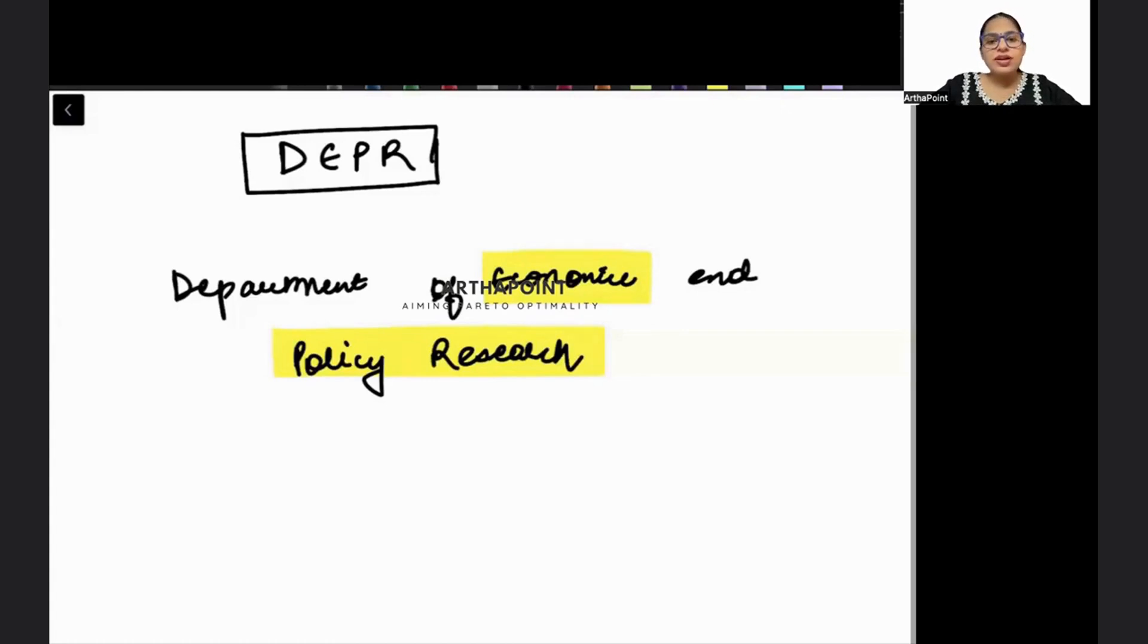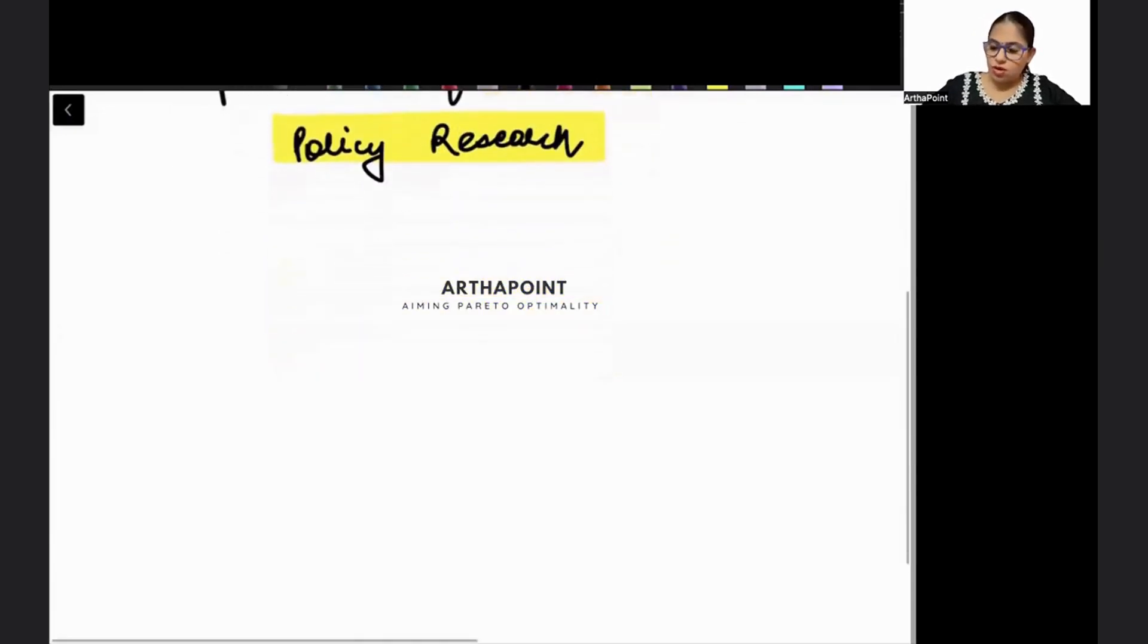You have to do this under the DEPR department. Every year there are approximately 35 to 37 vacancies which are released for this department. This is a good number of vacancies compared to any other government job. When we talk about the exam of DEPR, the registration usually starts - it's tentative - it starts in May or March to June, most of the time in May-June. The exam usually takes place in the month of June end or July.